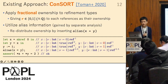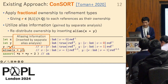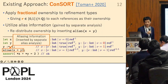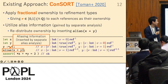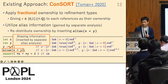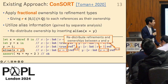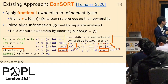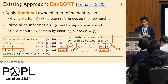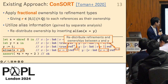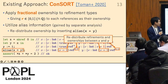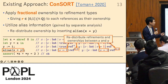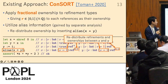Consort utilizes alias information via a separate alias analysis to redistribute ownership. The alias analyzer detects that x and y are aliases, so Consort inserts the annotation that x equals y. Thanks to this, the Consort type system can redistribute refinements and ownership to x and y. Ownership of 0.5 means the references are read-only — x and y can be read but not updated — and the assertion on the last line successfully verifies.